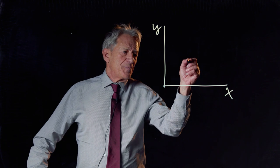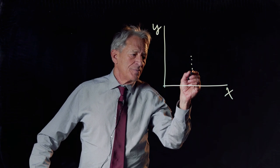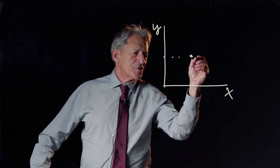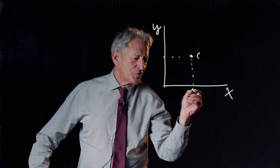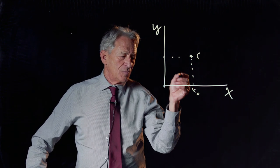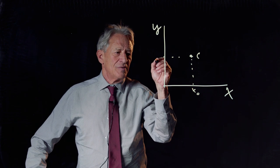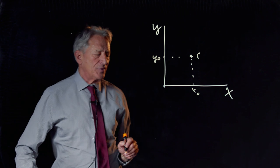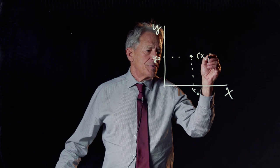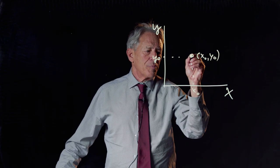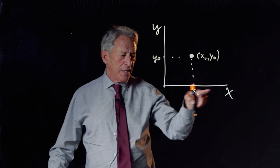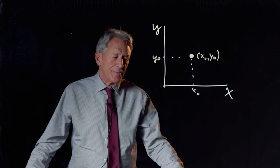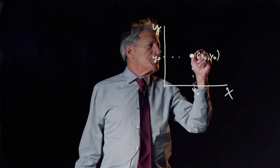And this state space, each point in state space represents, this is a certain number of glucose units or sharks, and this is a certain number of insulin units or tuna. This is the point X0, Y0, representing this many units of glucose and this many units of insulin. And so this is state space.